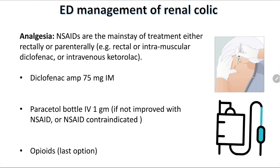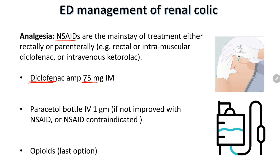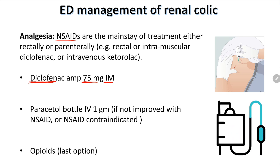Analgesia is the main management plan. Non-steroidal anti-inflammatory drugs are the mainstay of treatment, given either rectally or parenterally — rectal or intramuscular diclofenac, or intravenous ketorolac. Diclofenac, commonly called Voltaren, is used at a dose of 75 mg intramuscularly. It is contraindicated in peptic ulcer disease, asthma, ischemic heart disease, and renal failure.